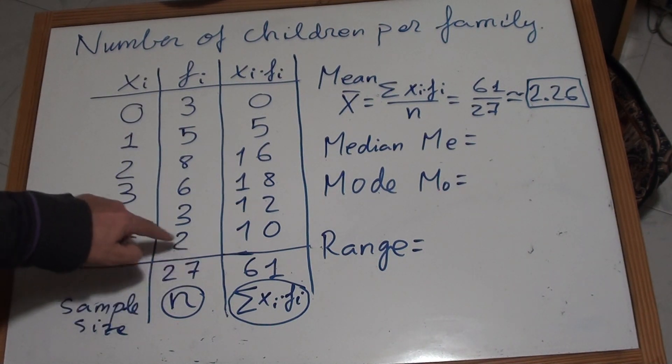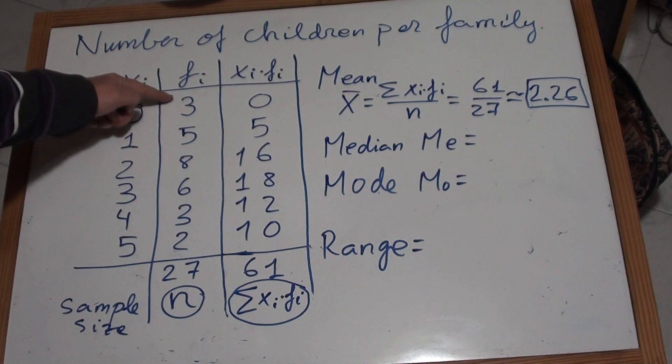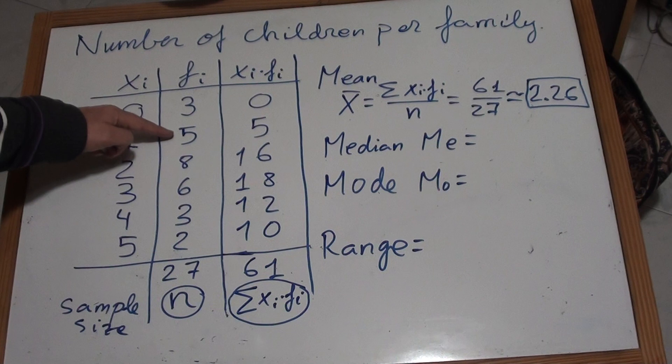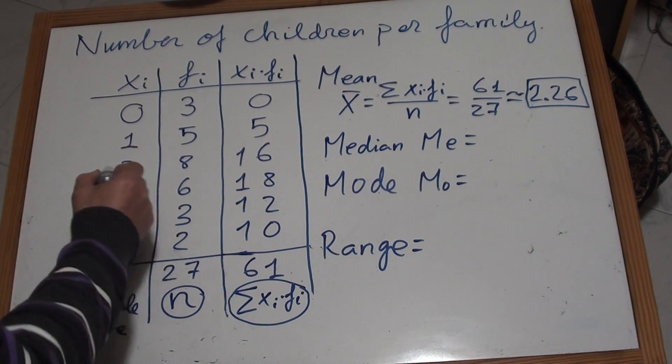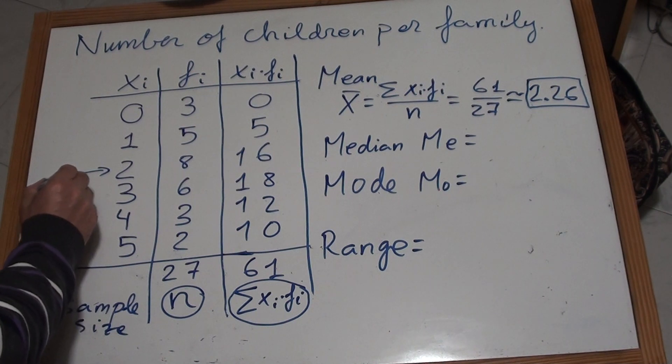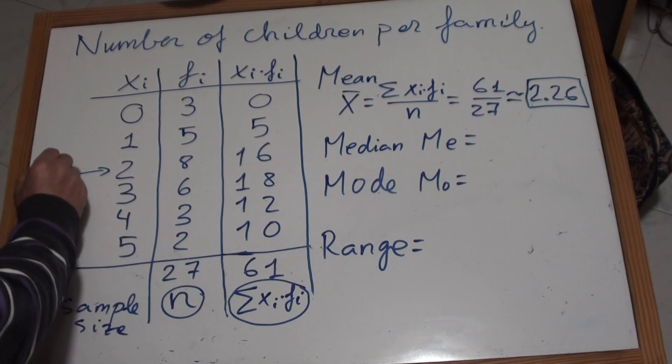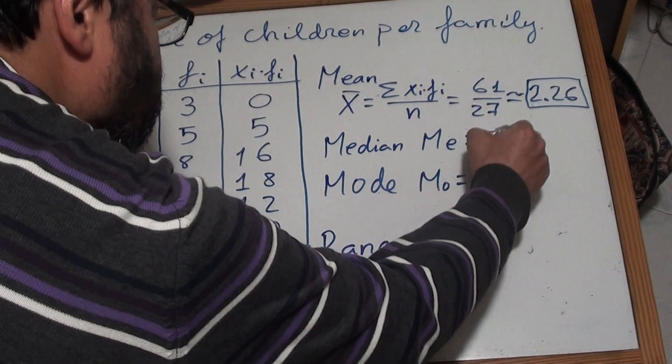27 is an odd number, so 14 is exactly in the middle because there are 13 below and 13 over 14. So we count here 14: 3 plus 5, that is 8, plus 8 is 16, so 14 is inside here. One of these families with 2 children is going to be the median. So the median would be 2.